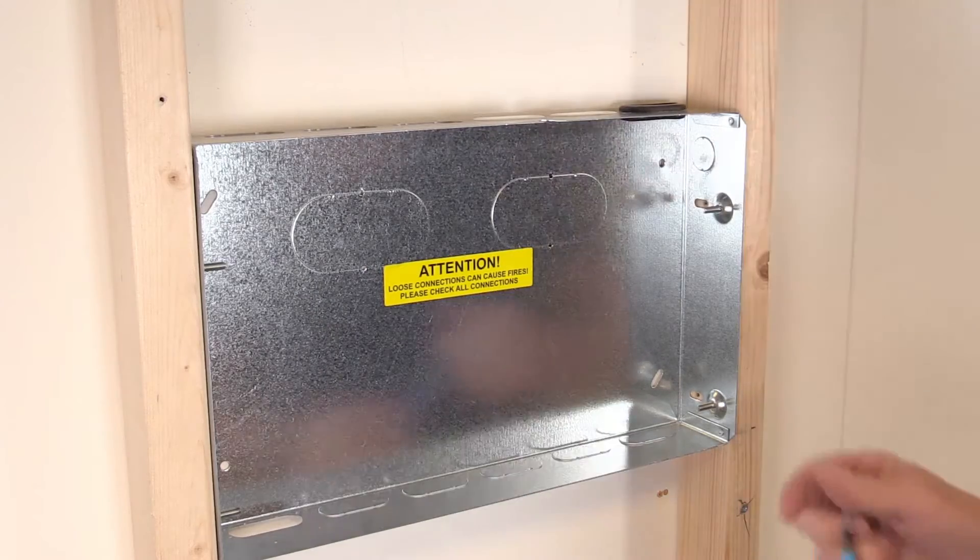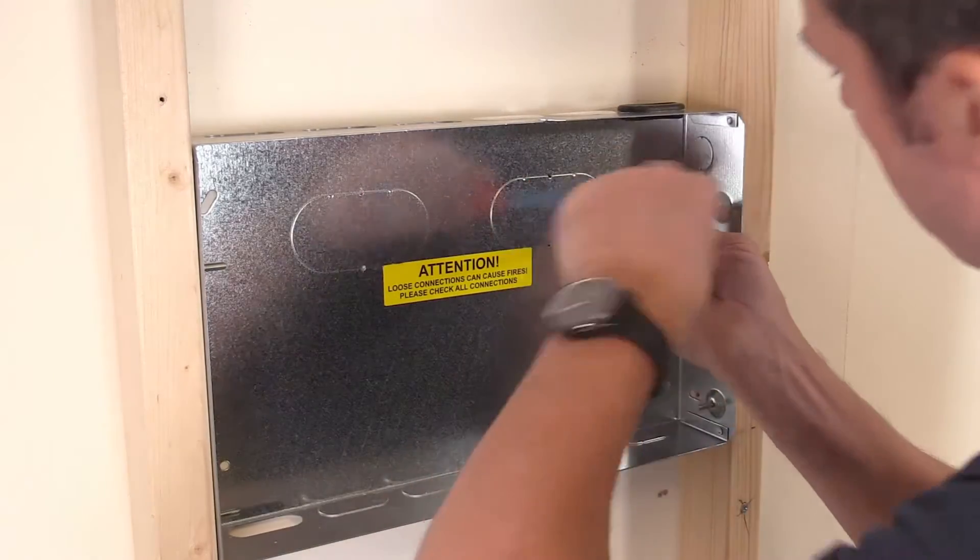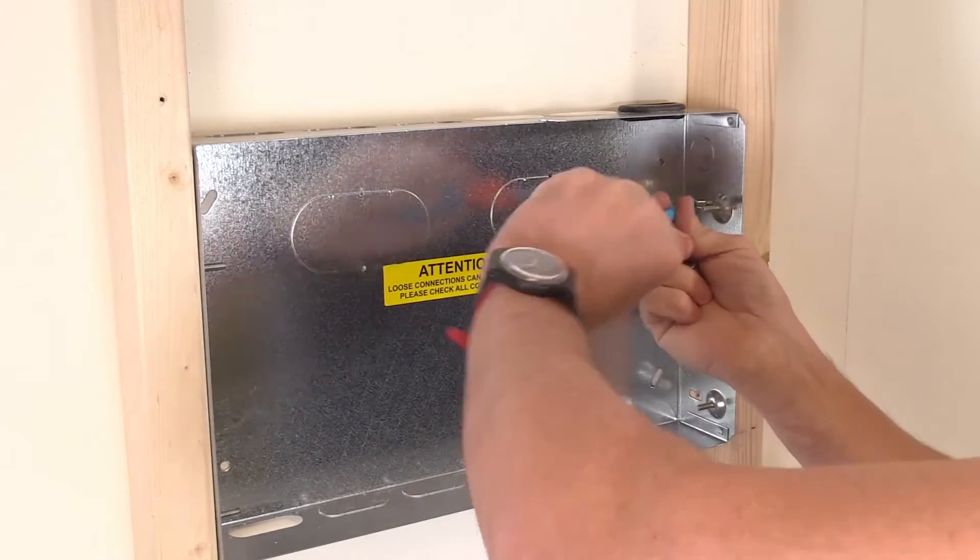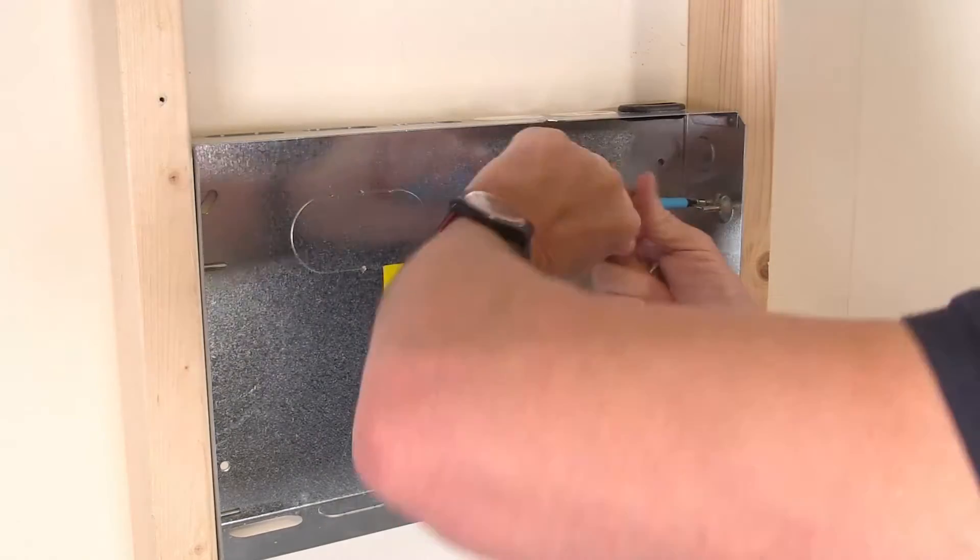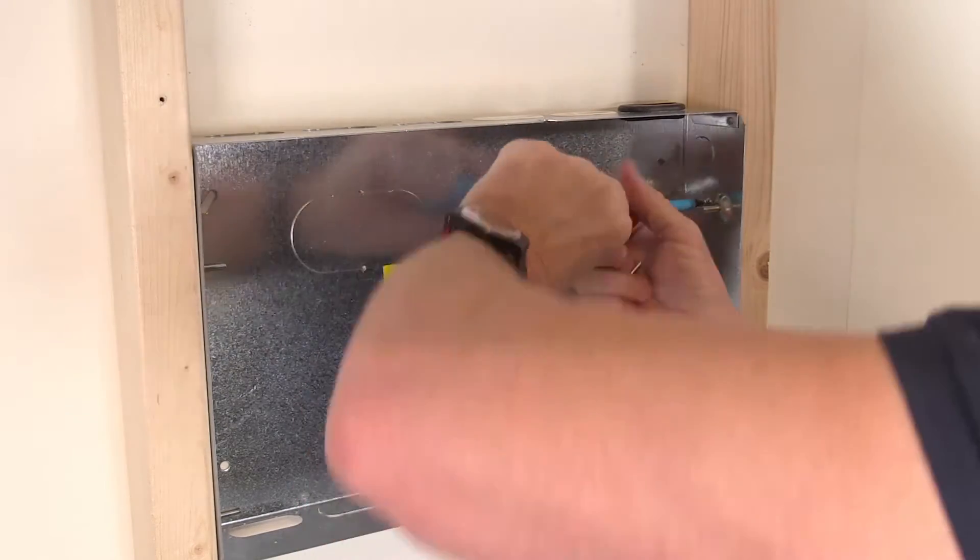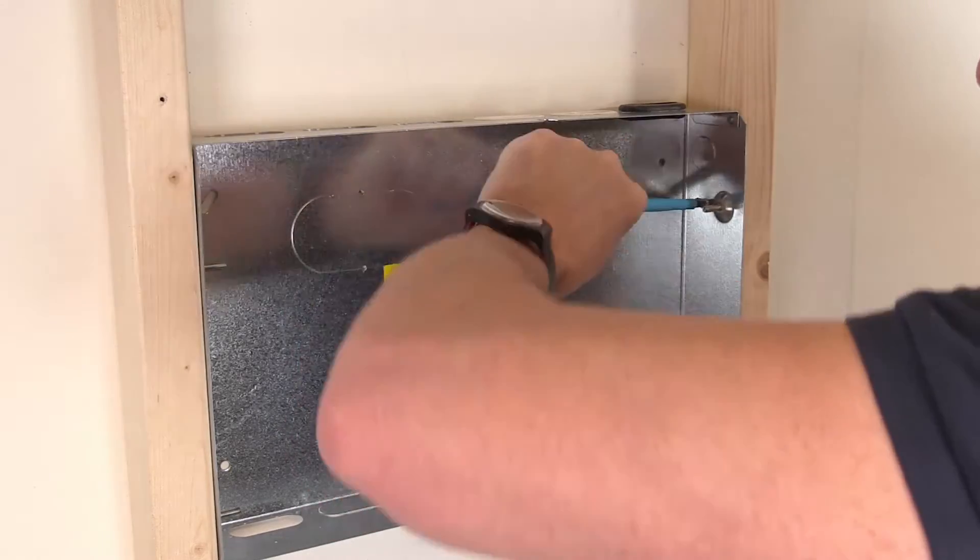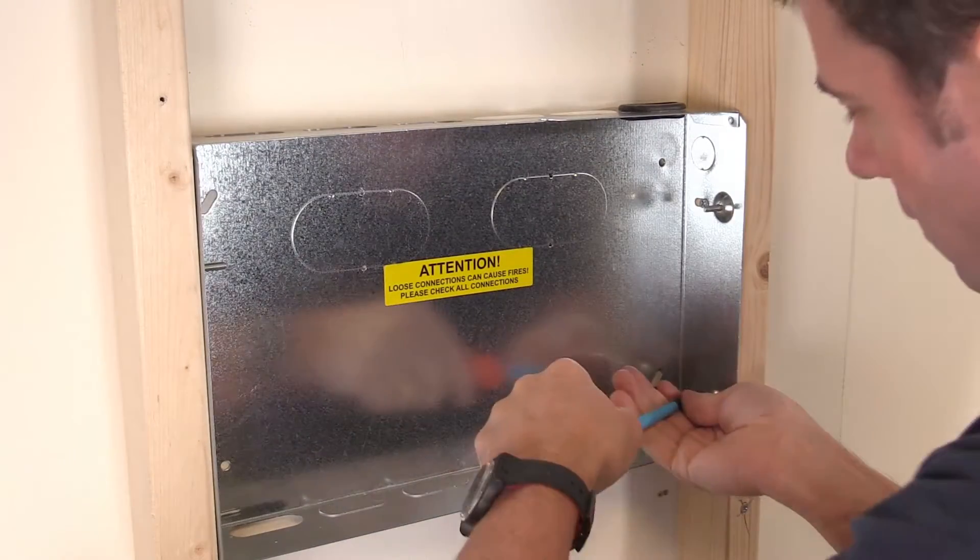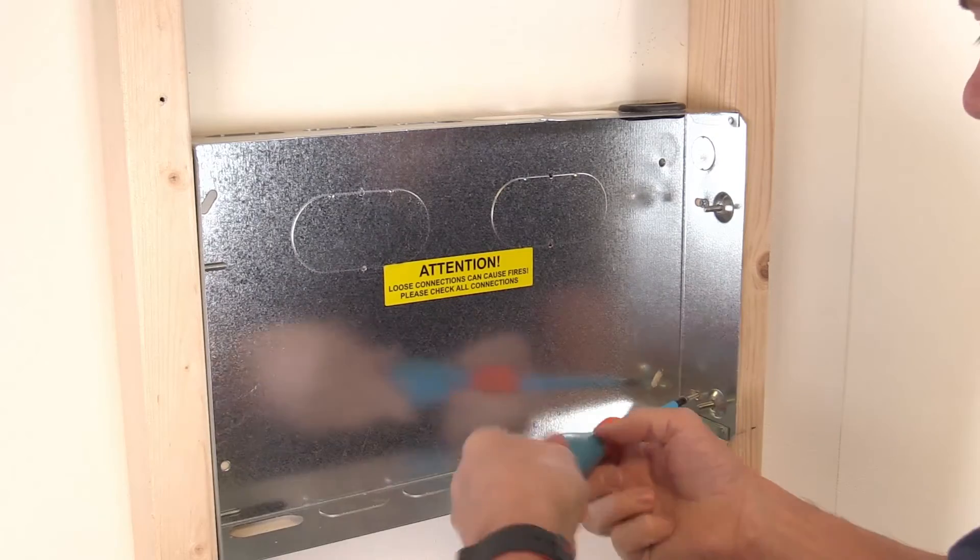Once you've got the height and depth right, use the slots on the inside edges to fix screws into the woodwork, securing the back box in place. It's worth checking at this point that the top and bottom edge don't protrude forwards of the stud work, as this will mean the board will be too far out of the wall when the cover is fitted.